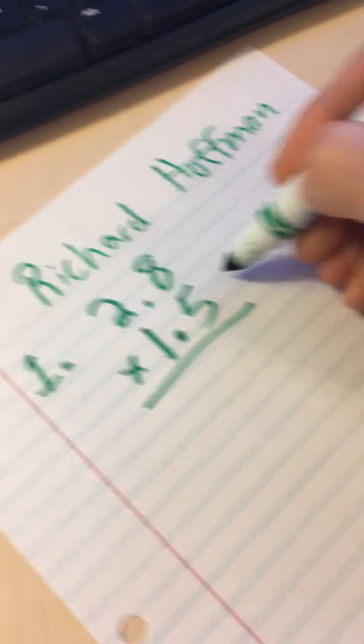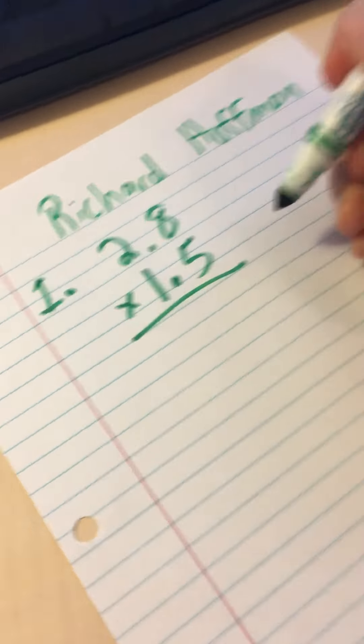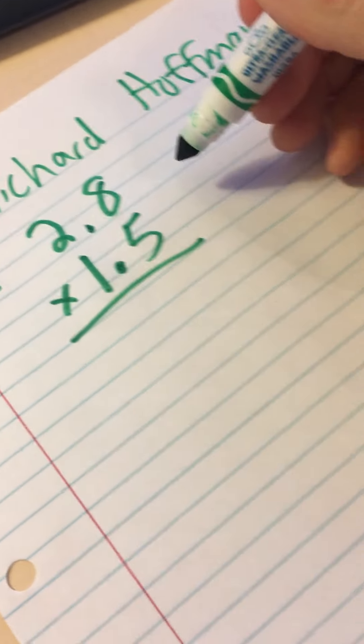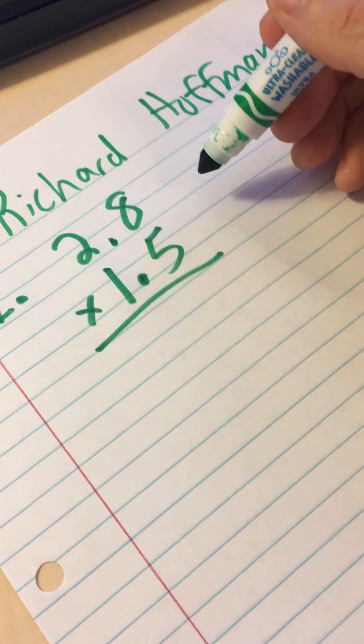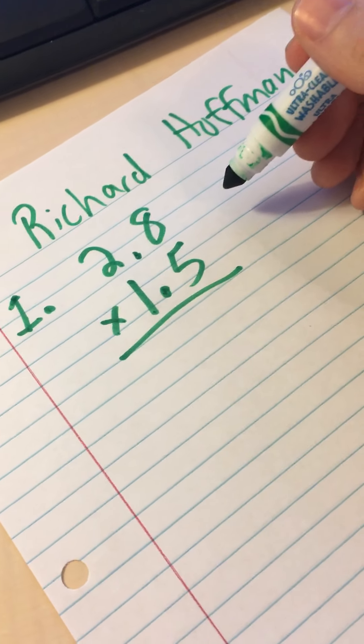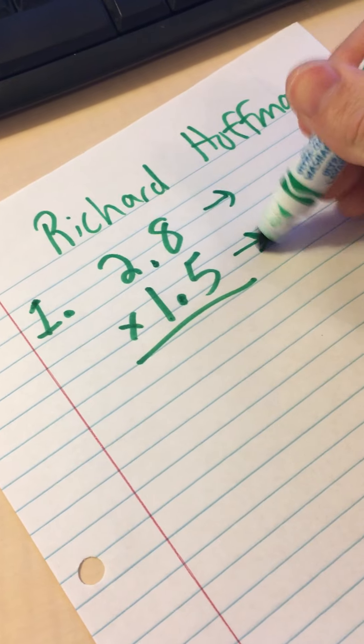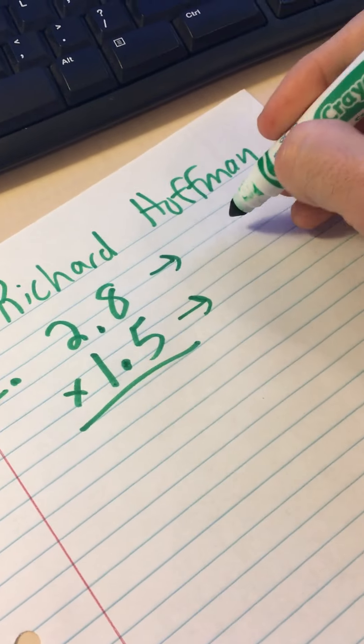Think out loud as you solve the problem. I know from learning I can use the method of decimal place value positions. So I'm going to do that. The first step for that is to rewrite the problem without the decimals.